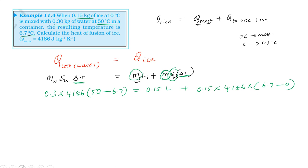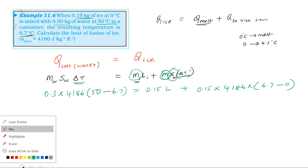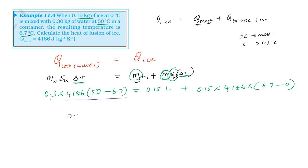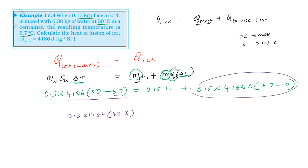So substituting all values: 0.3 times 4186 times (50 minus 6.7) equals 0.15 times L plus 0.15 times 4186 times 6.7. Solving for the latent heat of ice L from these values.